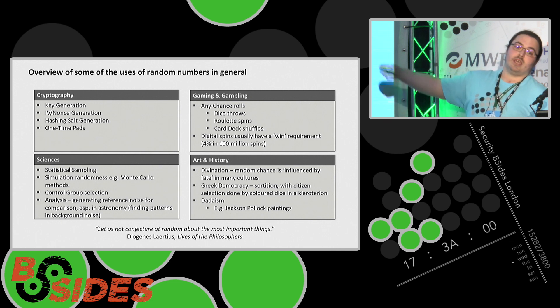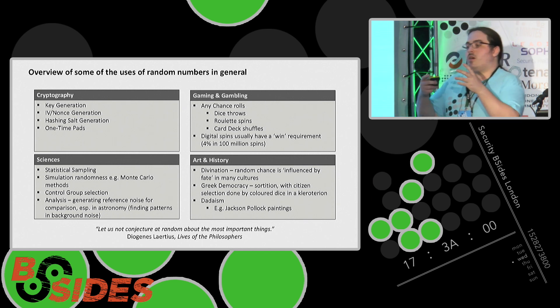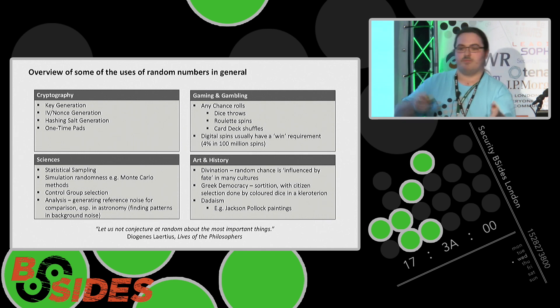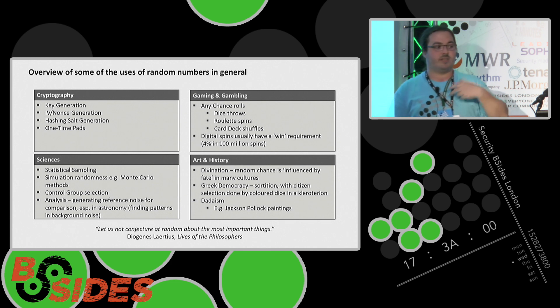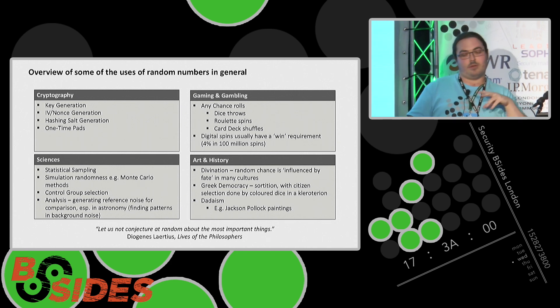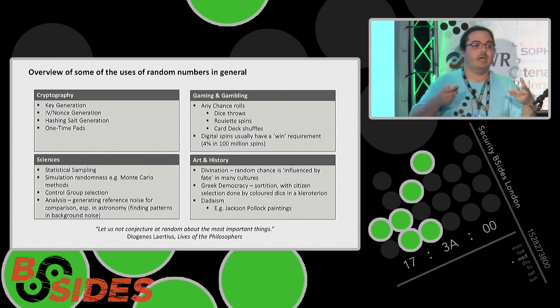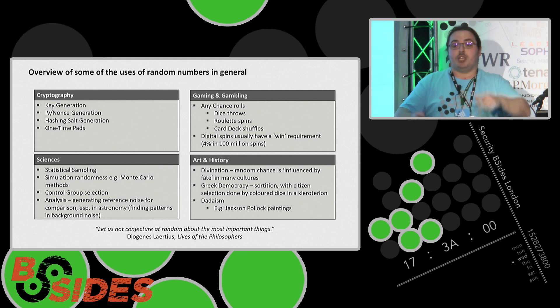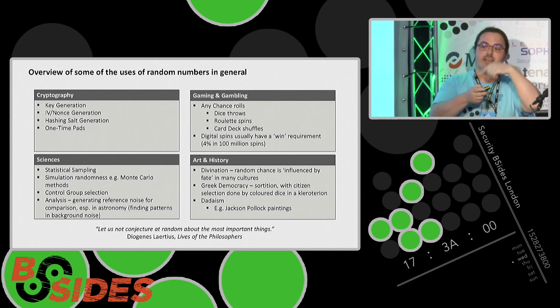We use random numbers in gaming and gambling. If you have a random dice throw, roulette spin, or card shuffle, you expect it to be random. You don't expect to be able to guess the next sequence of cards because otherwise you'd be able to game the system. Even digital systems have quite strict requirements, a 4% win over 100 million spins as a requirement. We also use it in science a lot. Statistical sampling, for example, relies on random numbers. Likewise, control group selection. If you are selecting a control group for a trial, you shouldn't be able to predict who is in the control group versus the test group.